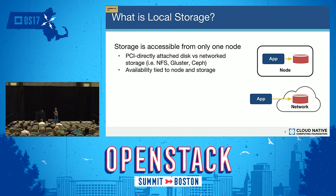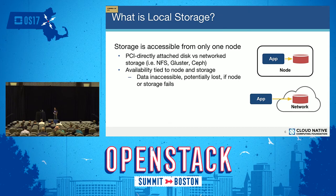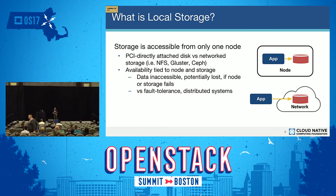An important property to remember is that the availability of local data is tied to the availability of the node and the underlying storage. If that node or storage fails, your data becomes inaccessible — it can even be lost depending on the type of failure. Contrast that to distributed storage systems like Ceph that have fault tolerance built in and can tolerate node and storage failures.